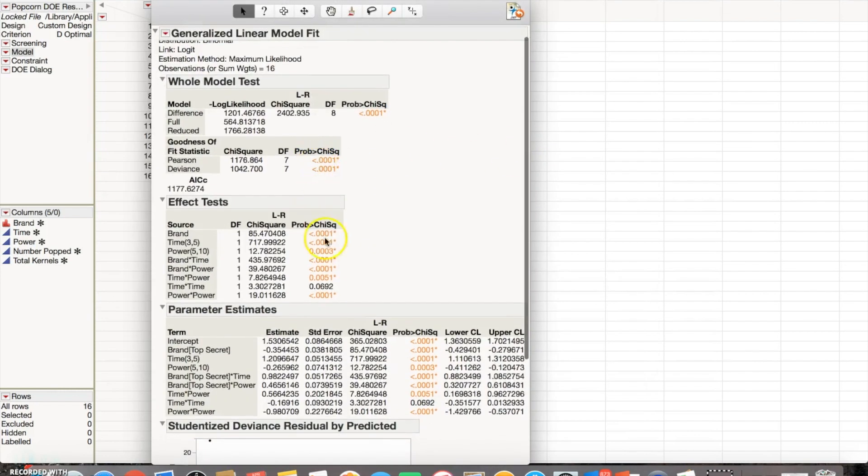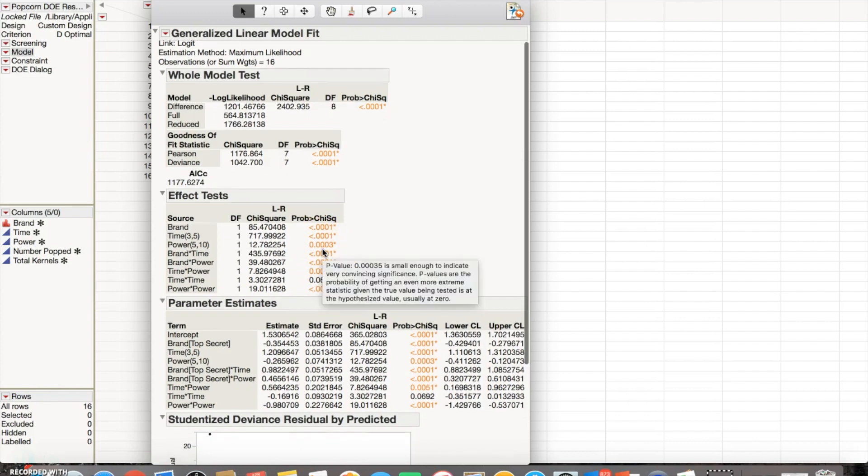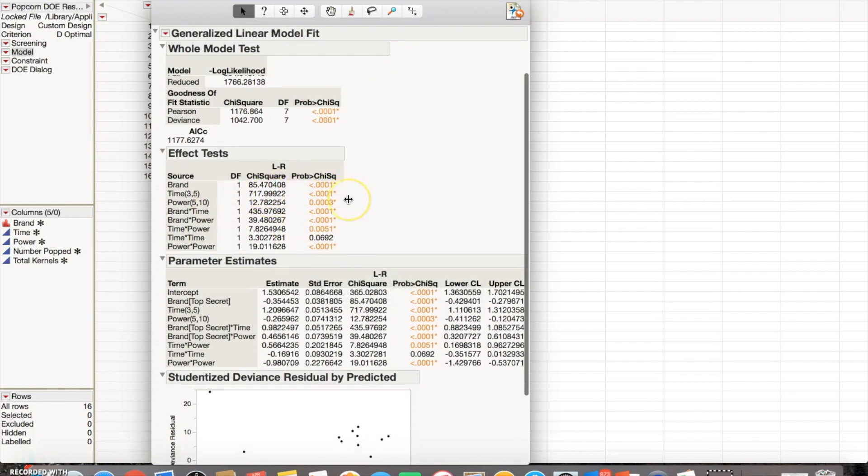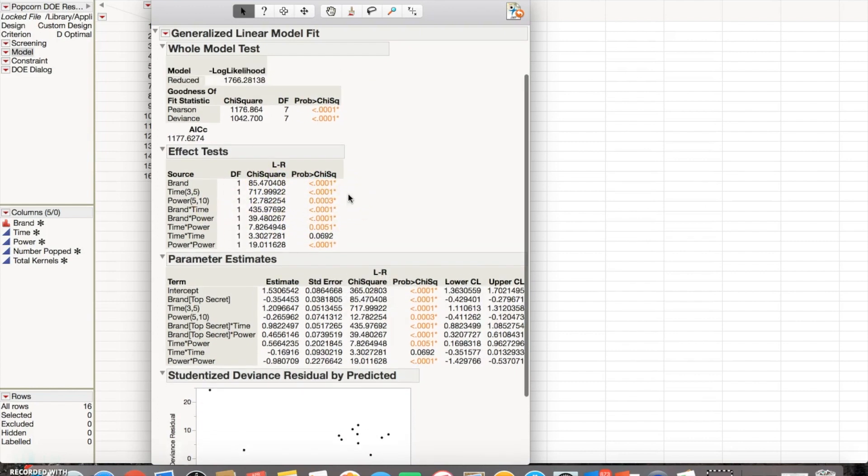As you can see here, it's got the different P values, and the ones that are in this orangish color are the most significant ones with this particular test. These are the ones we would want to focus on if we wanted to do further analysis of this study.